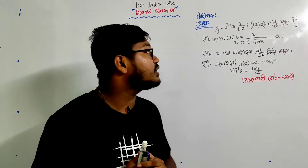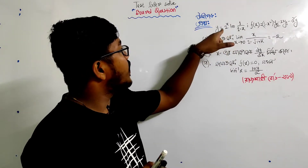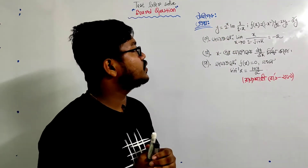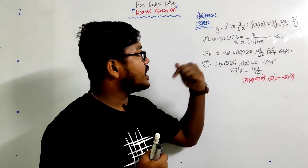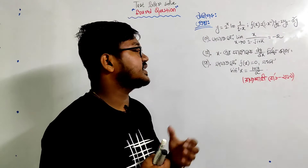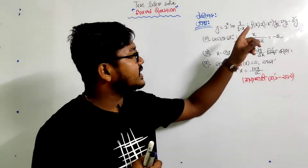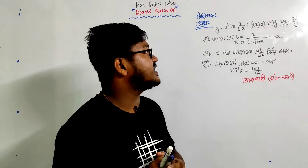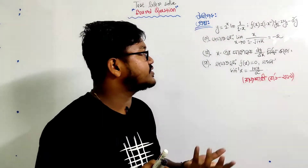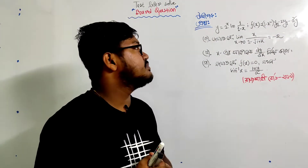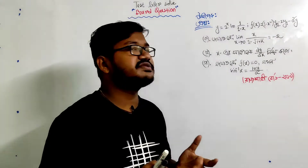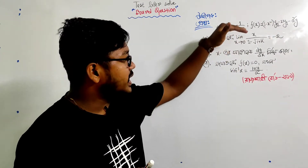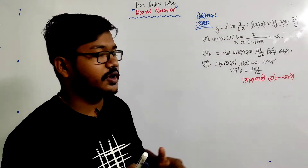What will we solve? We will solve: y is equal to 2 to the power of x into ln of 1 by 1 minus x. We will also look at f of x is equal to 1 minus x squared y minus xy minus y.